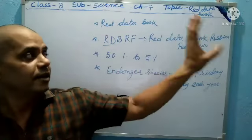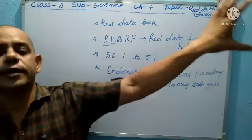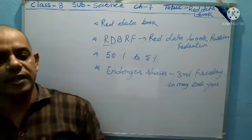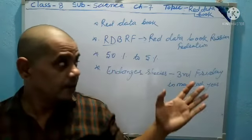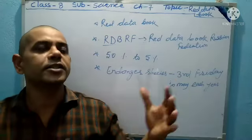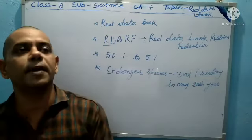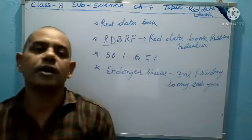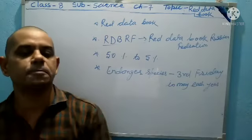That is the note on the Red Data Book and that species are conserved in a particular region so that the species can naturally grow and develop and the population is increased, then it can come out of the Red Data Book.